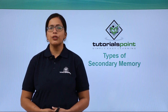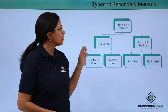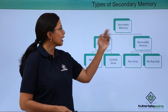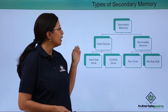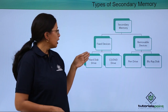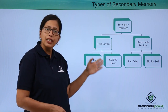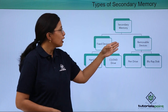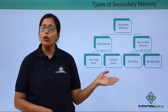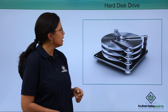In this video, we are going to discuss the different types of secondary memory devices. As we discussed in our previous video, secondary memory could be a fixed device or removable device. Fixed device examples include hard disk drive, CD drive, and DVD drive. Removable devices could be pen drive or Blu-ray disk. Let's discuss these in a bit of detail.